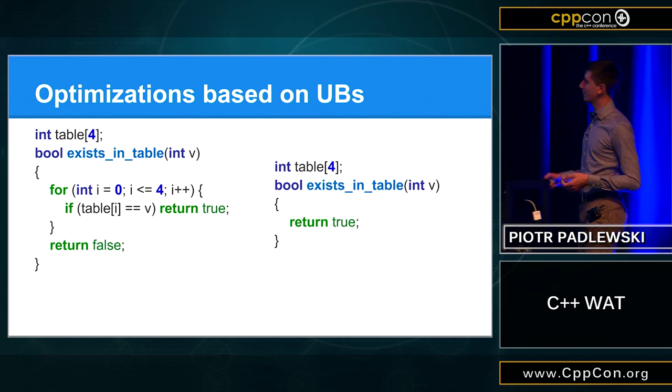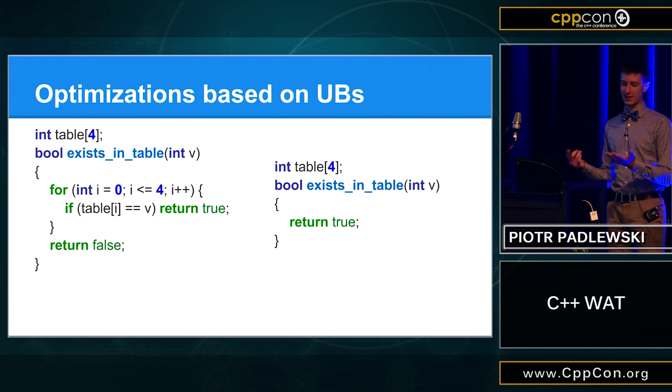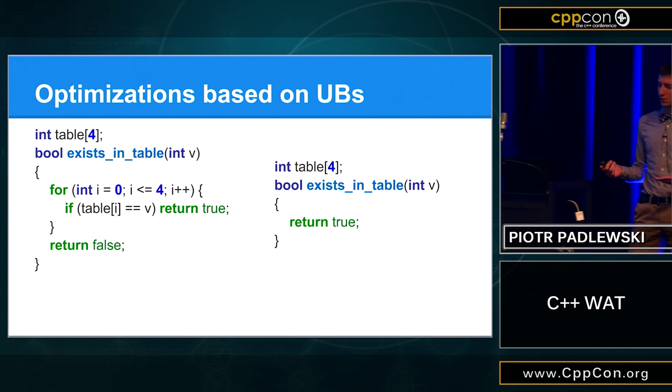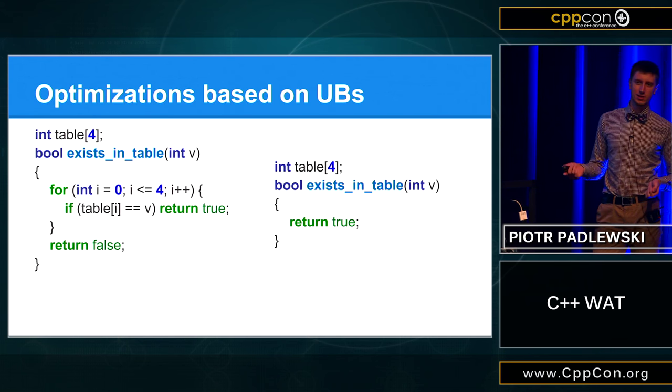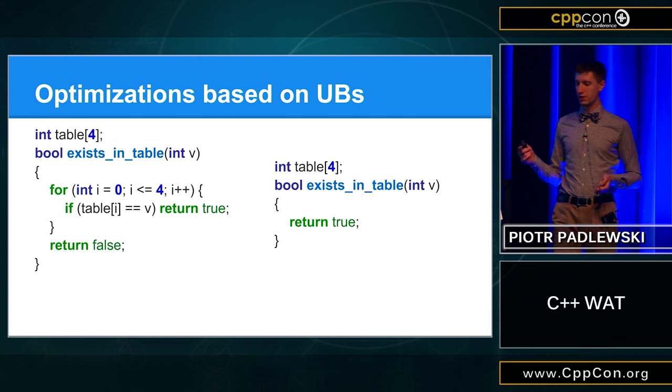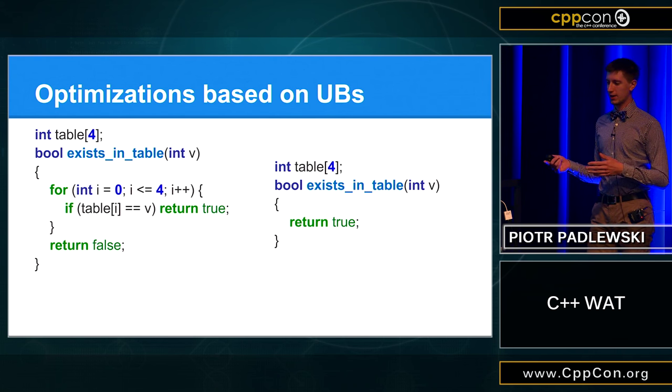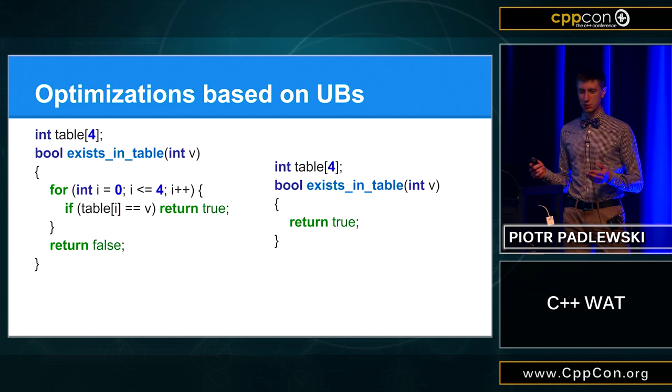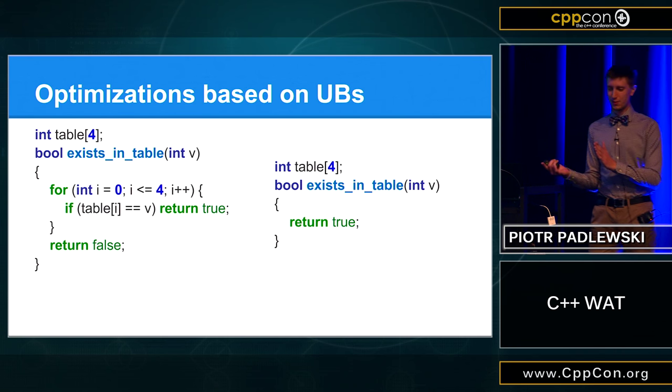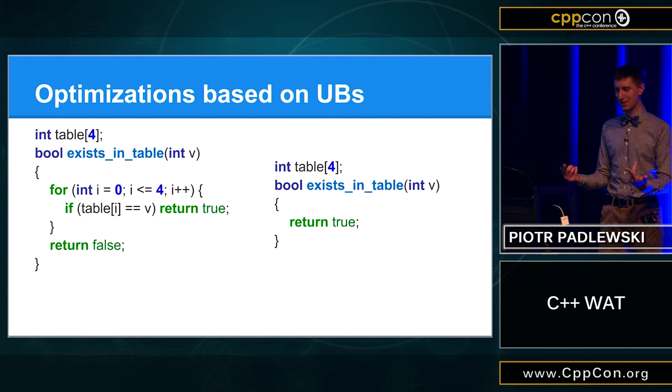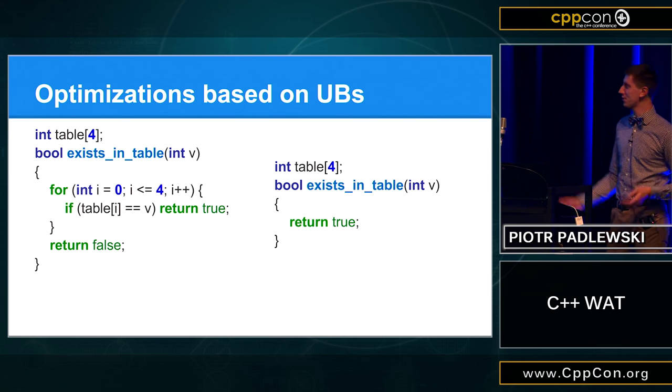And, in fact, Clang is doing a very good job. You will probably ask, like, okay, why doesn't it return false or something. So, in fact, the undefined behaviour only triggers when you will hit the fifth element. So, Clang assumes that we will not get to the undefined behaviour. And if we will not get to the undefined behaviour, it means that we will find the thing in the table. So, just return true. Okay.